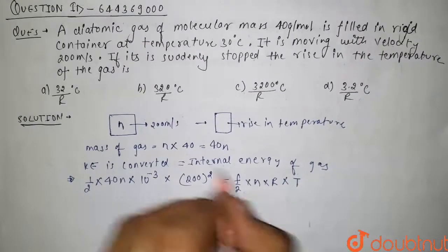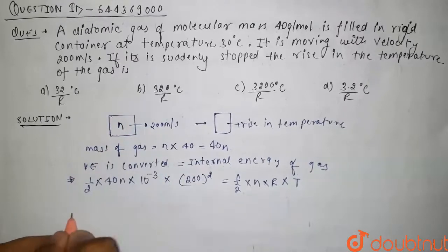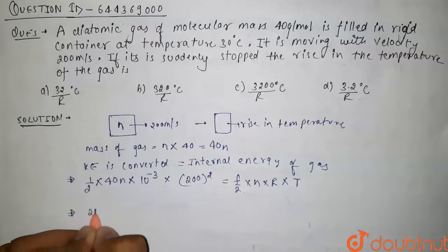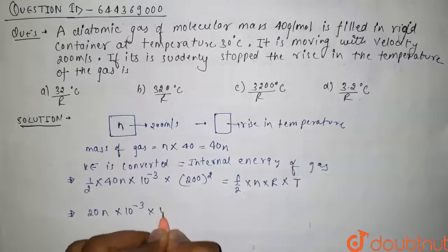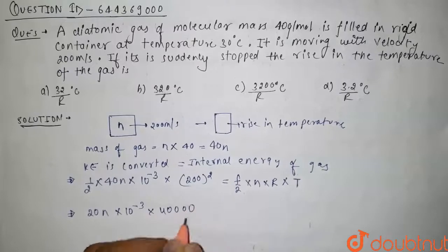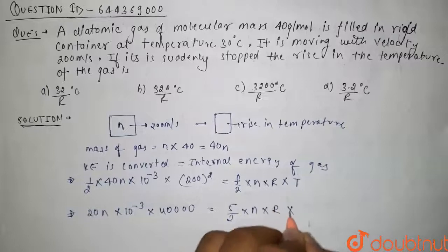Now we know that for diatomic gas, degree of freedom f is 5. So it will be 20n times 10 to the power minus 3 times 40000 equals 5 by 2 times n times R times t.